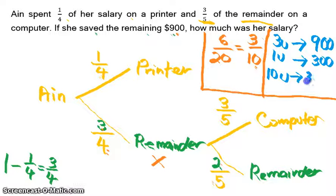So Ain's salary, based on the denominator, the total units, is three thousand dollars. I hope this helps. You can download more of my questions, I'll post it up soon. All right, see you, bye.